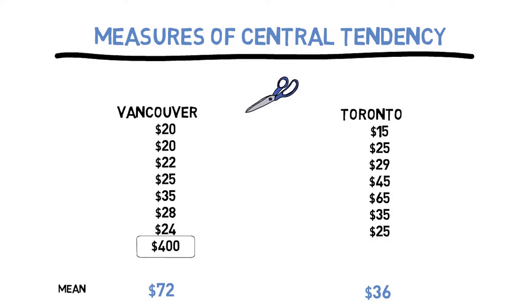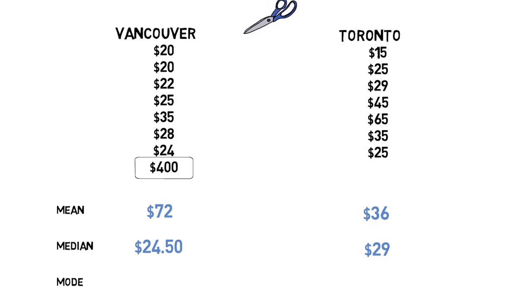So now that we know that the mean is not enough, we can calculate the median, which is essentially the middle number in a dataset. To calculate the median, you order the numbers in ascending order and record the number at the middle point, which we would get $24.50 for Vancouver and $29 for Toronto. But we still don't get the full picture, so we introduce the mode. The mode is the most frequently occurring number, which is $20 for Vancouver and $25 for Toronto.